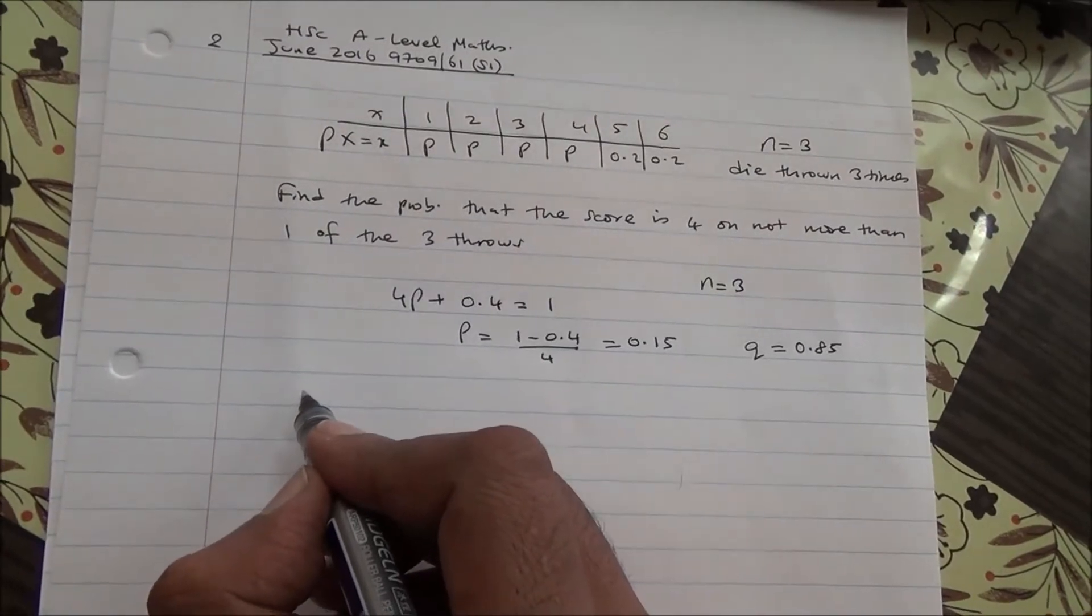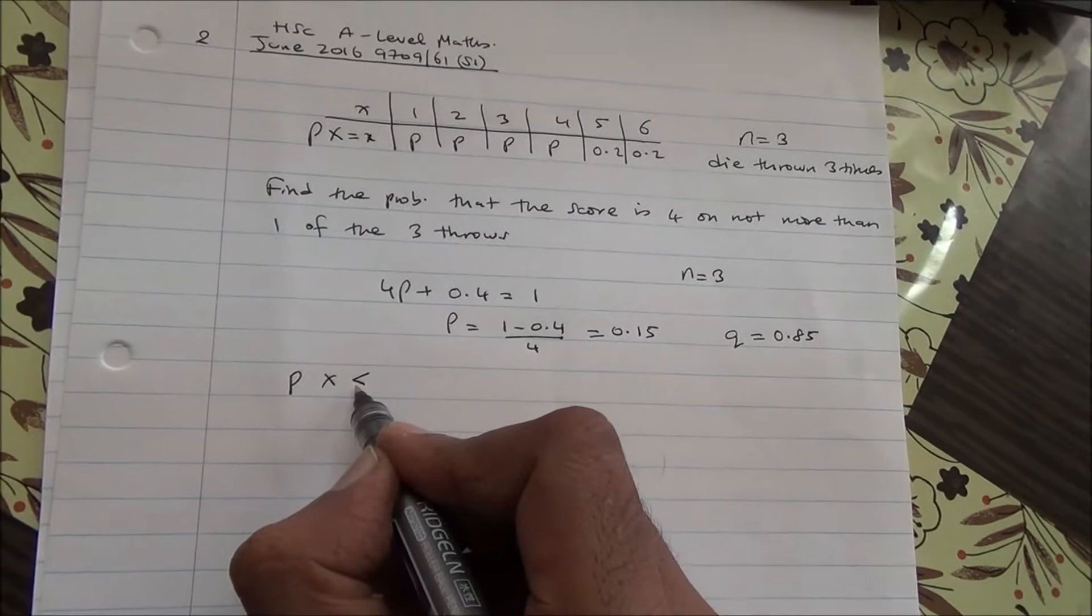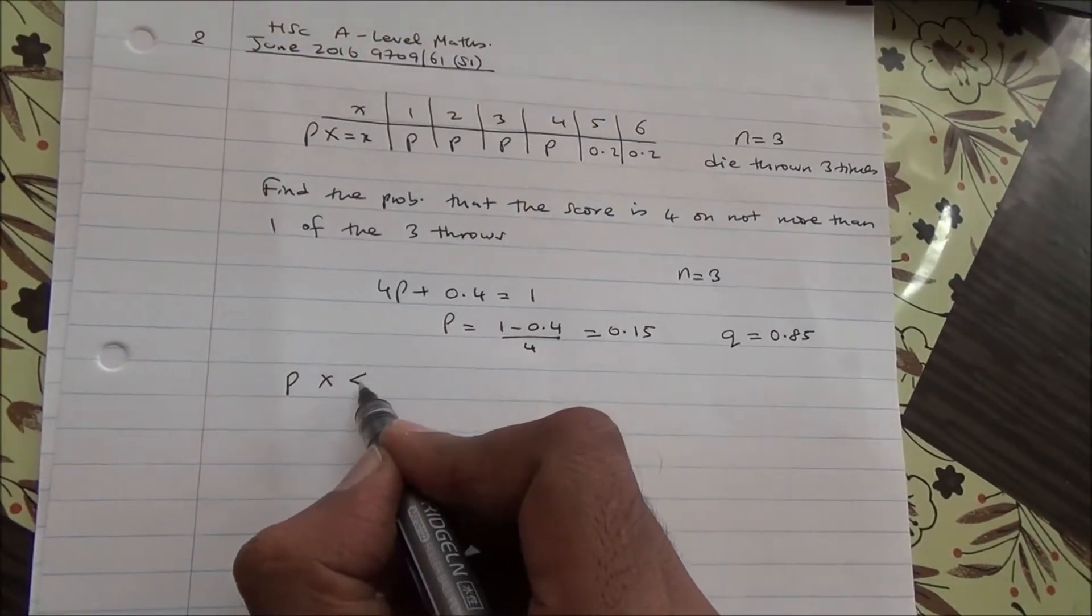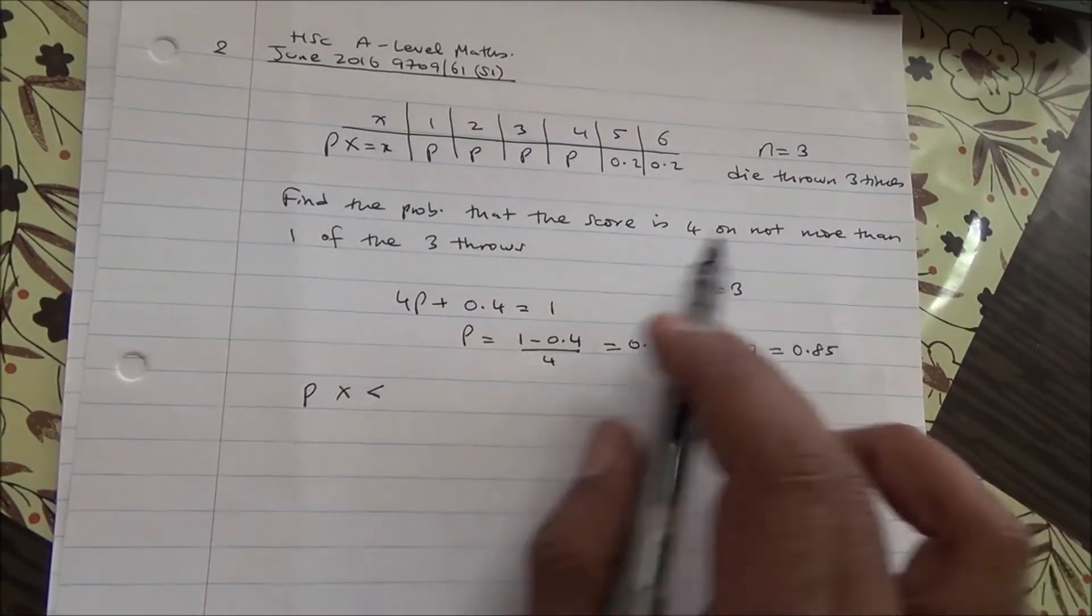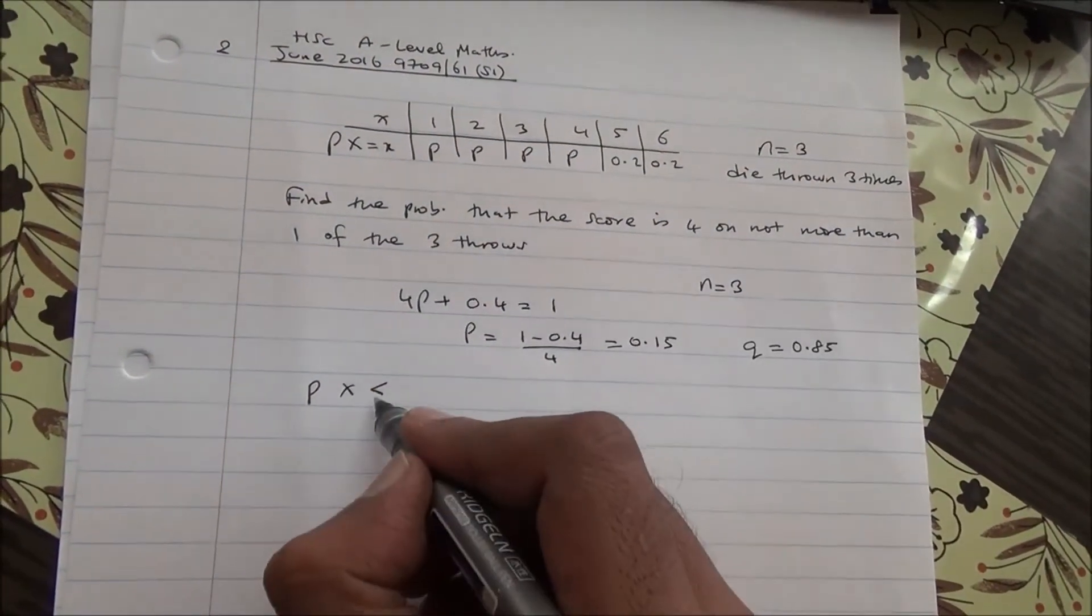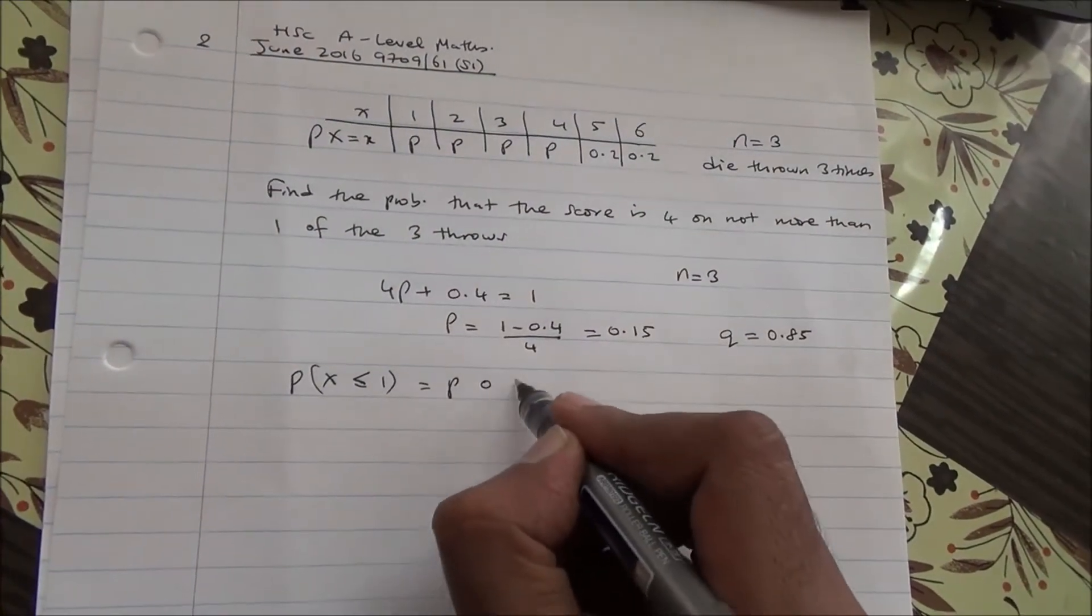We are trying to find the probability of X being less than or equal to 1. That's going to be the probability of 0 and 1.